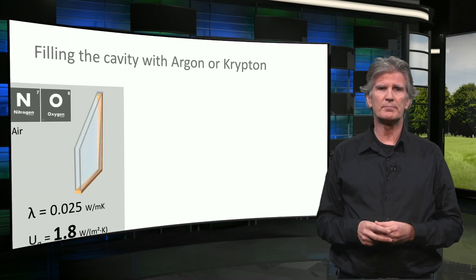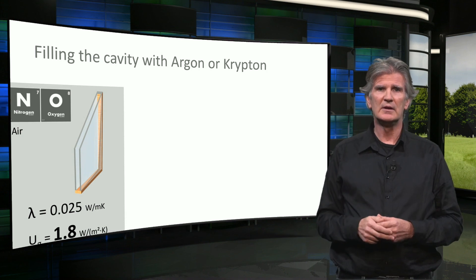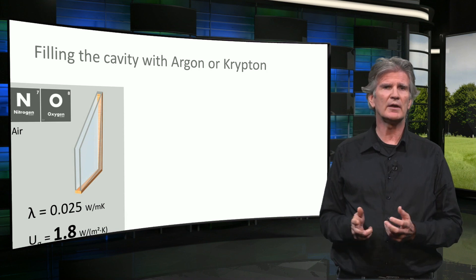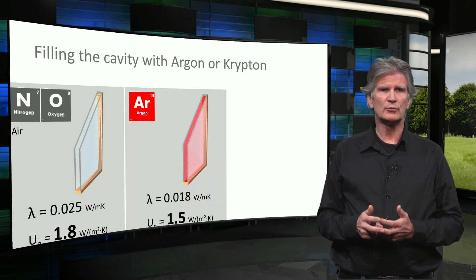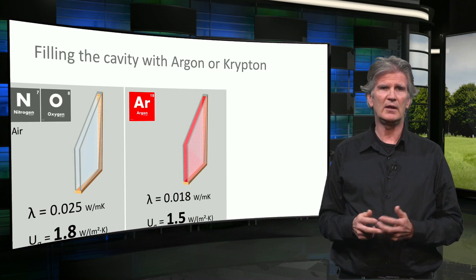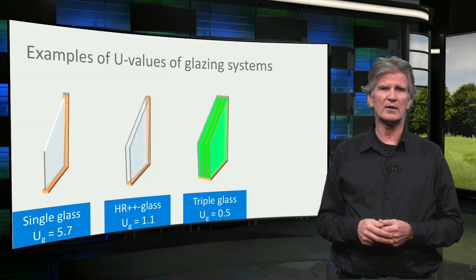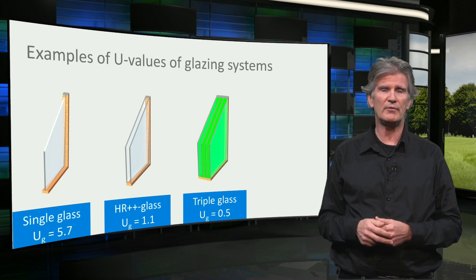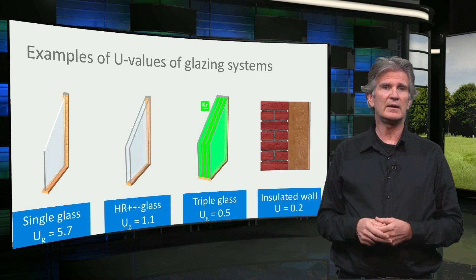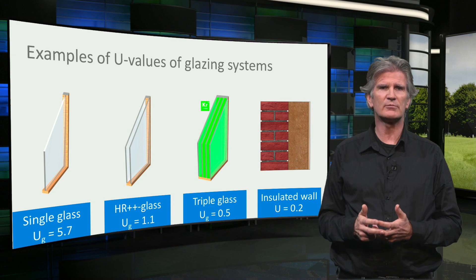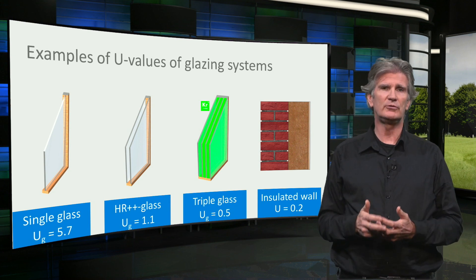The final technology is to replace the air in the cavity with another gas that has a lower thermal conductivity, like argon or krypton. Starting with double glazing with a low-E coating and an air-filled cavity, the U-value is 1.8. It reduces to 1.5 with an argon-filled cavity and to 1.1 with a krypton-filled cavity. With these technologies, modern insulating glass can have a U-value as low as 1 or even 0.5. But compared to a well-insulated wall with a U-value of 0.2, it is still relatively high, meaning that reducing the size of the windows is also an important measure to reduce transmission losses.